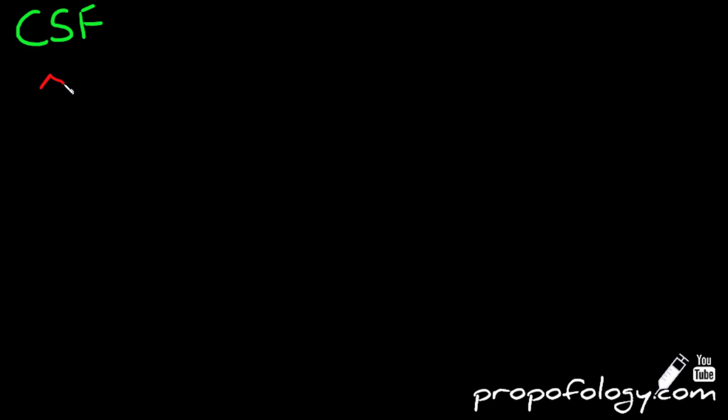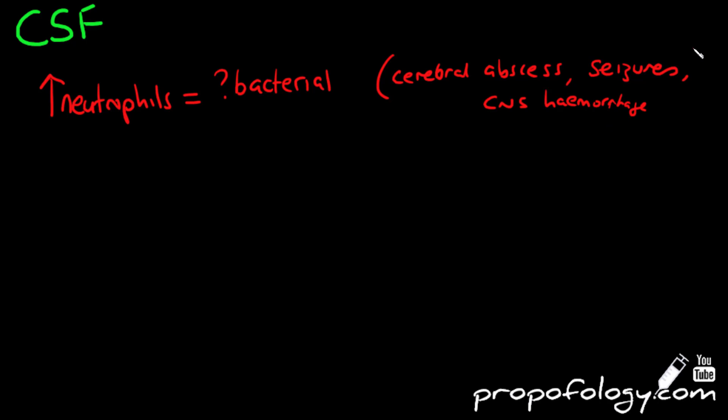As we've already said, CSF normally contains a small number of cells which are usually lymphocytes and monocytes, and the total cell count is less than 5 cells per millimeter cubed. An increase in cell count suggests either an infection of the CNS or a number of pathological CNS conditions. The differential cell count provides further information regarding the possible cause of any CNS disease present.